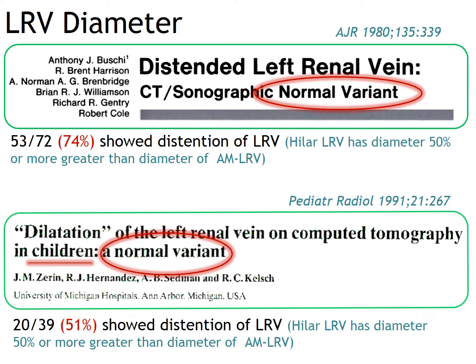Looking at previous articles regarding left renal vein diameter, we can find two articles — one in an all-age group and another in a children group — saying that very commonly, in 74% in one article and 51% in the other, the hilar portion of the left renal vein is dilated 50% or more than the diameter of the aorto-mesenteric portion. Both articles concluded this is a normal variant finding.